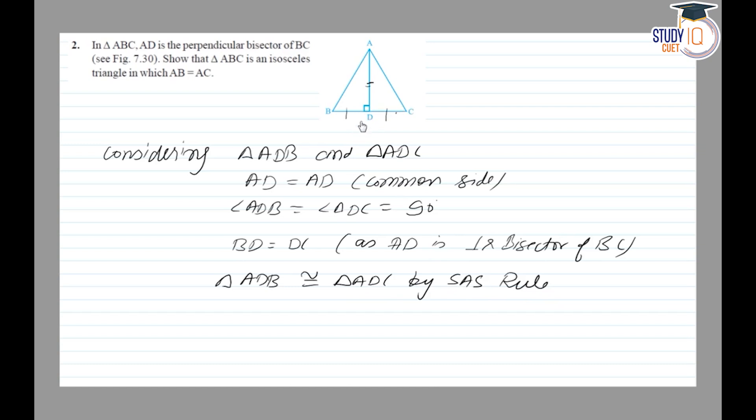Therefore, AB is equal to AC by CPCT, that is, congruent parts of congruent triangles. So I will say triangle ABC is an isosceles triangle. This is how we prove it.